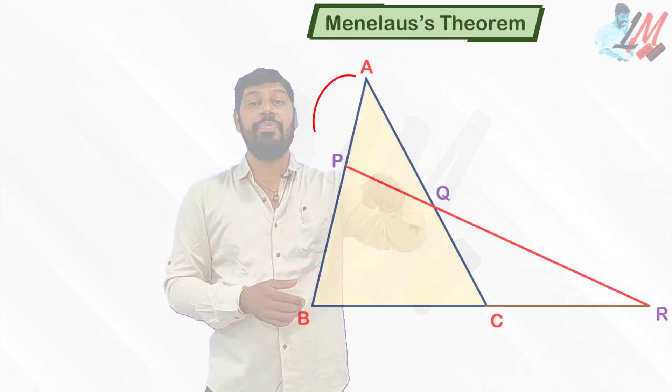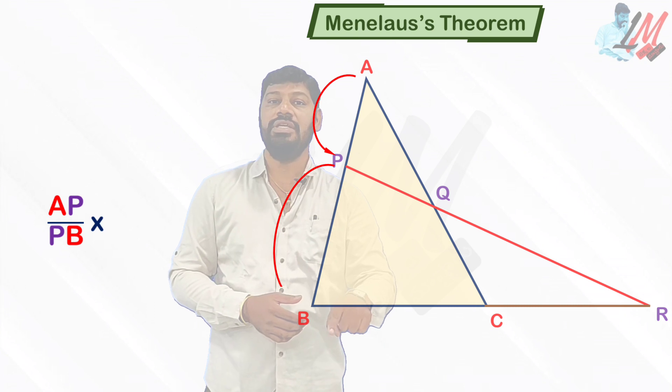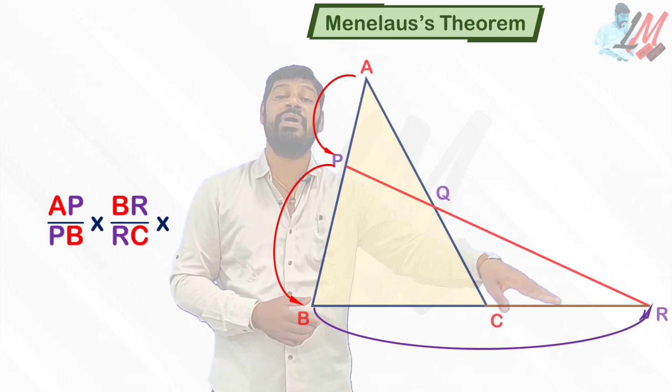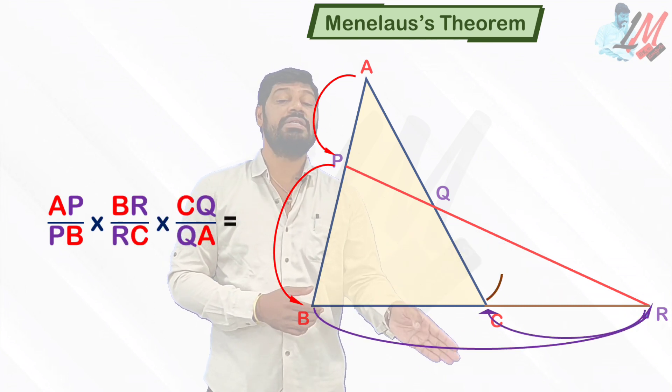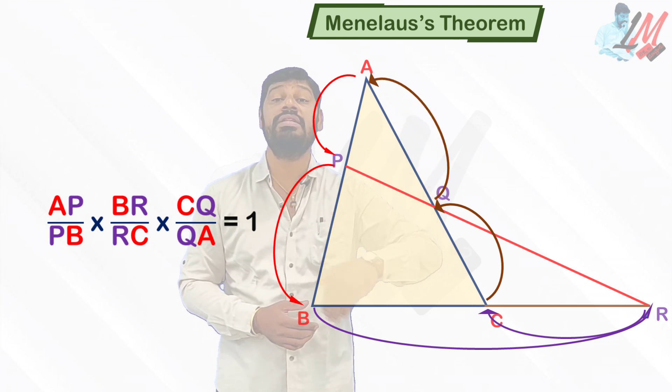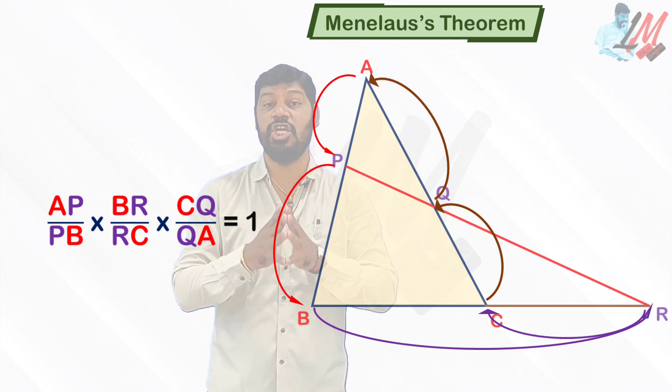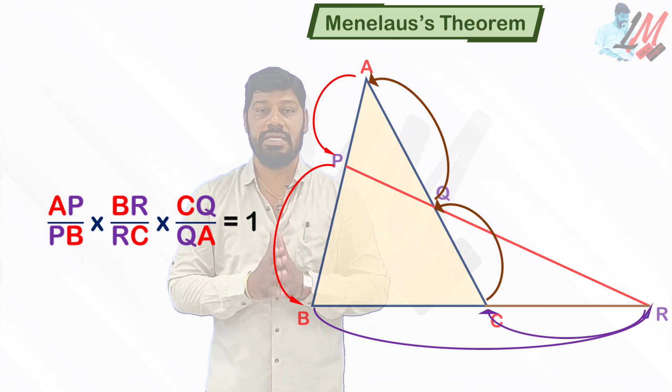Then AP by PB into BR by RC into CQ by QA, the product of all these three ratios will be always equal to one. This was Menelaus's theorem.